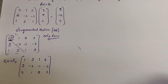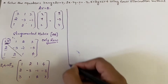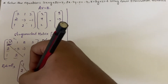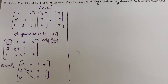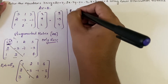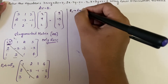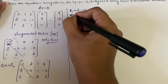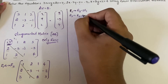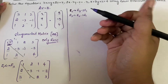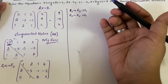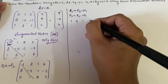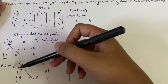Now we can do the row operations. Our target is to make the two elements below the first diagonal element zero. Simple: R2 will become R2 minus 2×R1, because 2 minus 2 is zero, and R3 will become R3 minus 3×R1. R1 remains as it is: [1, 2, 1 | 4]. For R2: 2 minus 2×1 = 0.